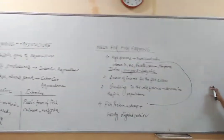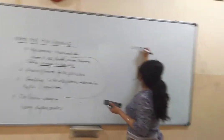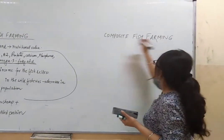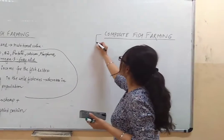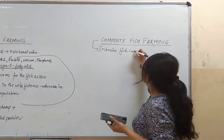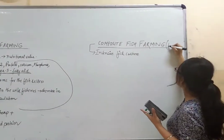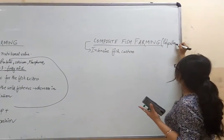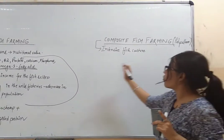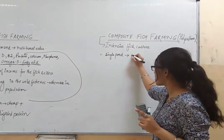Now we discuss a very interesting form of fish farming that comes under intensive fish culture: composite fish farming, also called polyculture. In composite fish farming, many varieties of fishes are grown in a single pond. 'Poly' means many, so many varieties are cultured together in one single pond.